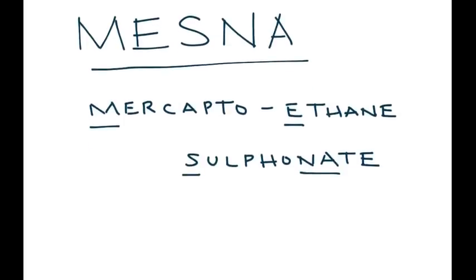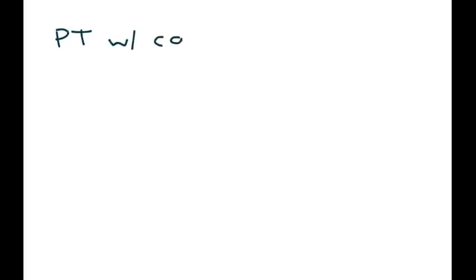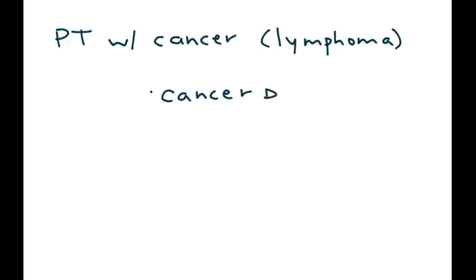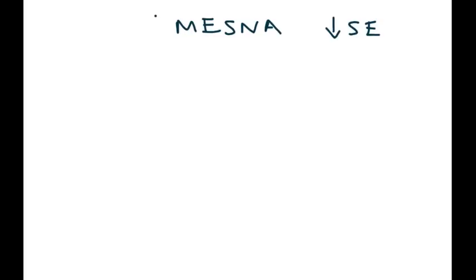Mesna is a drug used to decrease the side effects of certain cancer drugs. For example, a patient with lymphoma is given a chemotherapeutic drug to treat the condition, which leads to significant side effects. You can give mesna along with the cancer drug to help decrease those side effects. Therefore, mesna is known as a chemoprotectant.